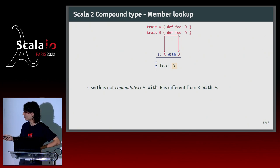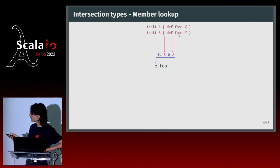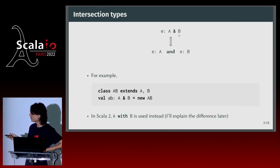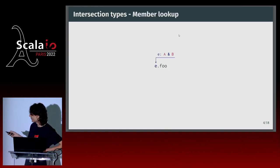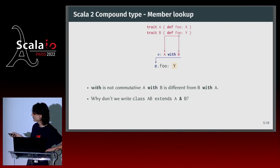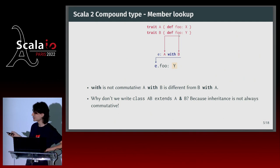You might wonder — in Scala 3 you can write `class A, B extends A, B` using comma syntax, so why not write `class A, B extends A & B`? Because `with` is not commutative. There's something going on with inheritance: writing `extends A & B` would be problematic because we said `&` should be commutative, but inheritance is not always commutative.